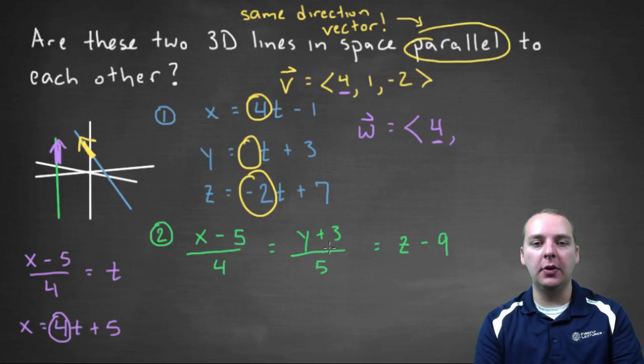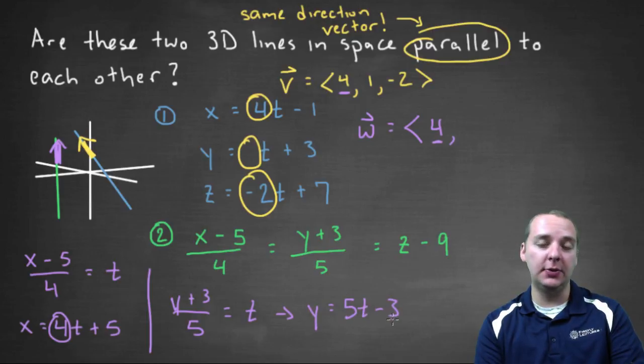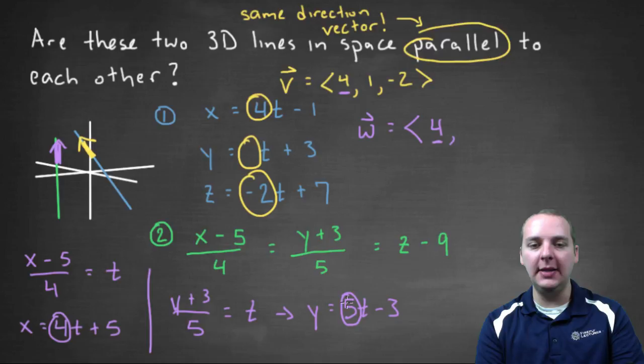Alright, let's do the same thing for the second component. We'll take y plus 3 over 5, set that equal to the same parameter t, which will give us y equals 5t minus 3. Right? And so I can see my BT plus Y naught. So the B is 5.